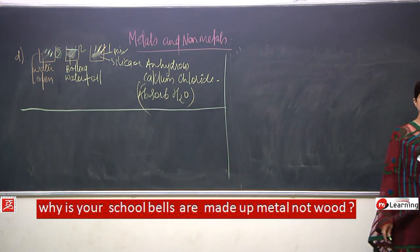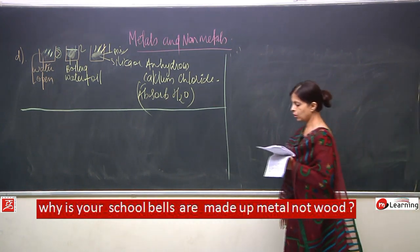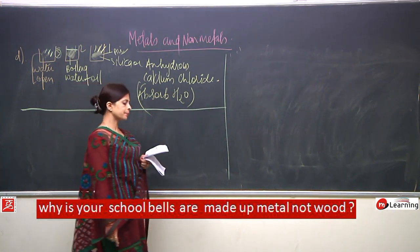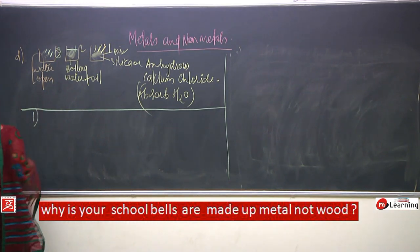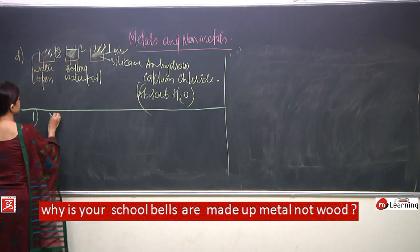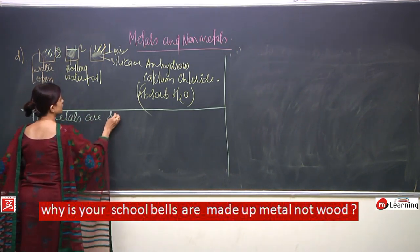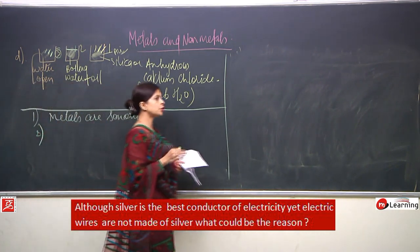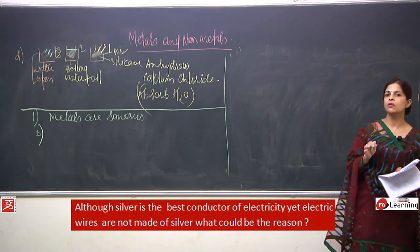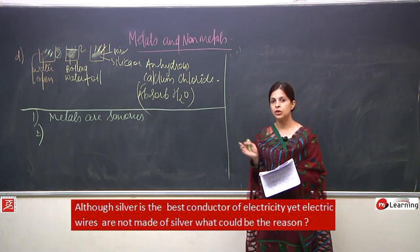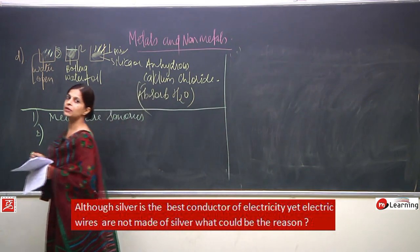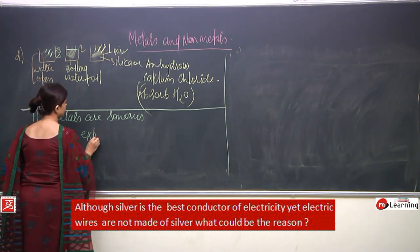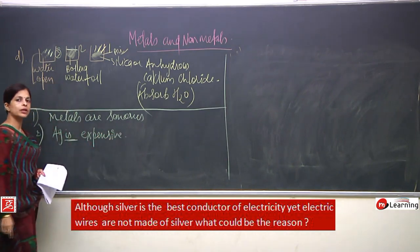Although silver is the best conductor of electricity, electric wires are not made of silver. The reason is that silver is very expensive and costly, so we cannot use it. Instead, we use copper or sometimes aluminium for electric wires.